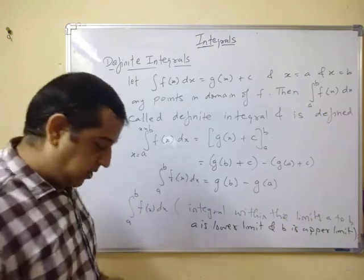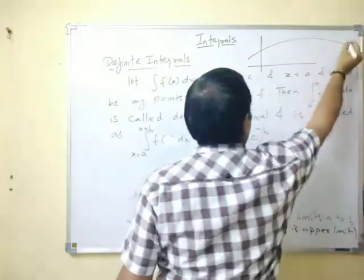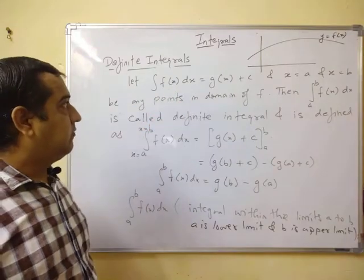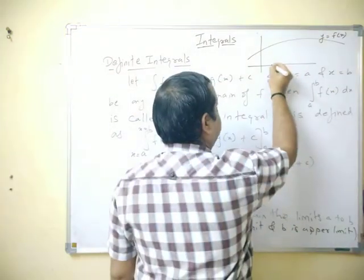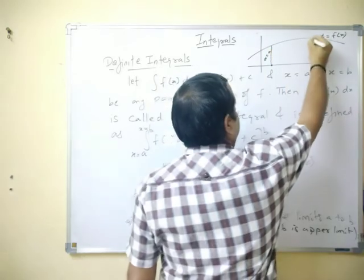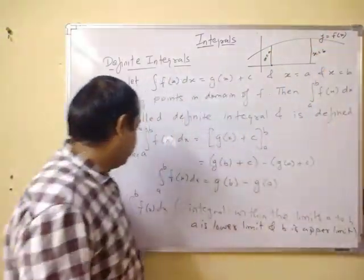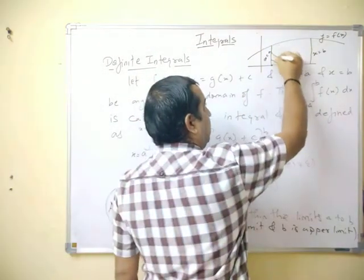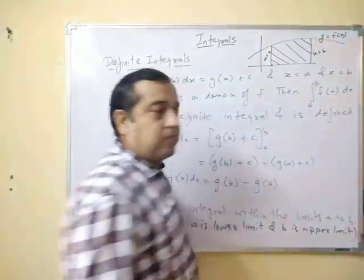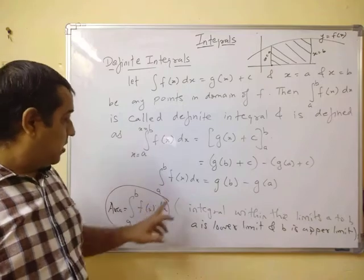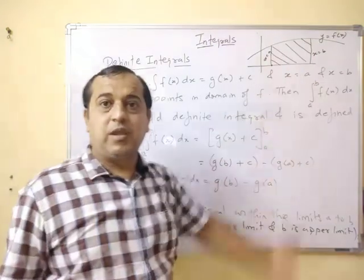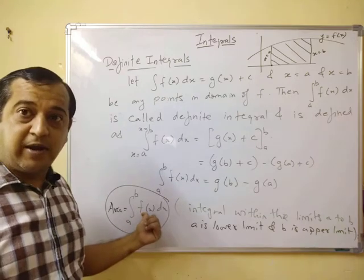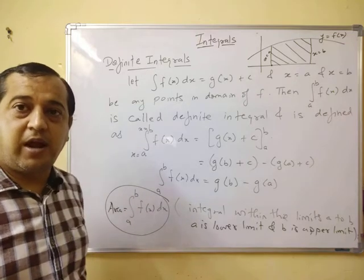Geometrically, what does the definite integral indicate? Suppose this is the curve y equal to f(x), the function we are integrating. x equal to a and x equal to b are the boundary points — x equal to a gives a vertical line, and x equal to b gives another. Geometrically, this definite integral represents the area bounded by the curve y equal to f(x), the lines x equal to a, x equal to b, and the x-axis.